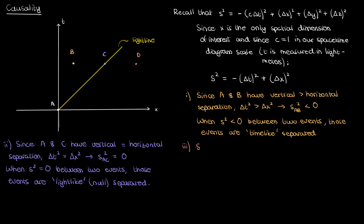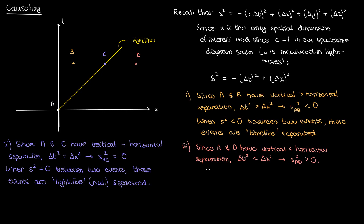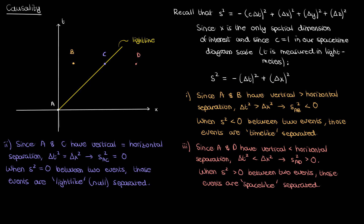For events A and D: the vertical (time) separation is less than the horizontal (distance) separation, so delta t squared is less than delta x squared, meaning the spacetime interval between A and D is positive. When the spacetime interval is positive, those events are said to be space-like separated, because the spatial separation dominates over the time separation. A and D are therefore space-like separated events.